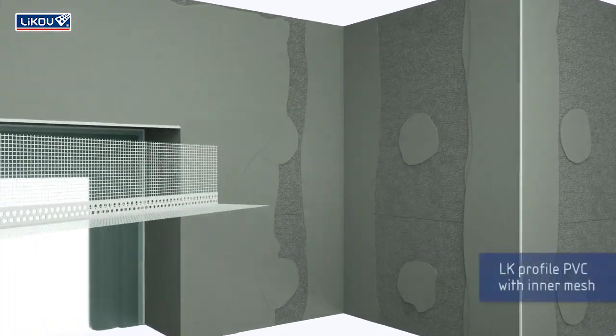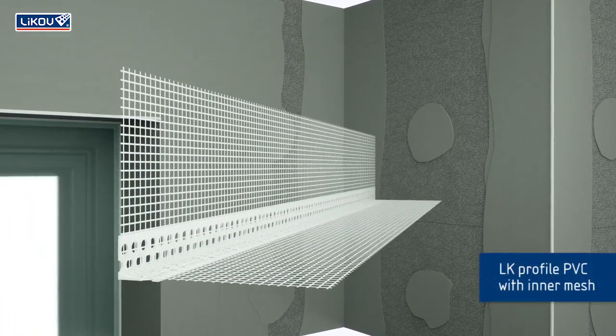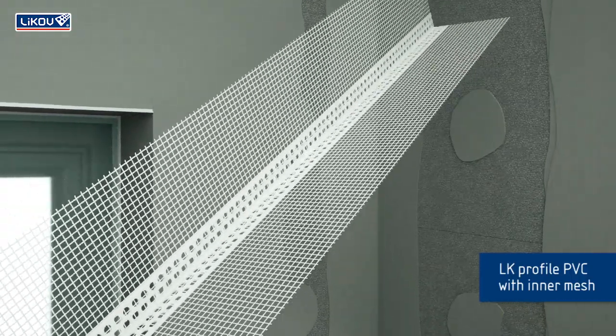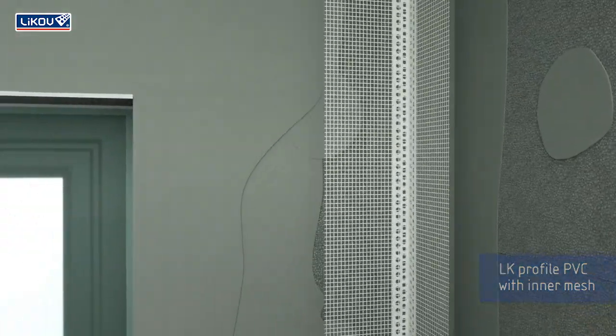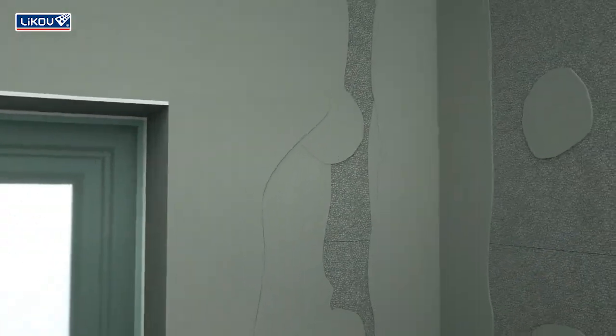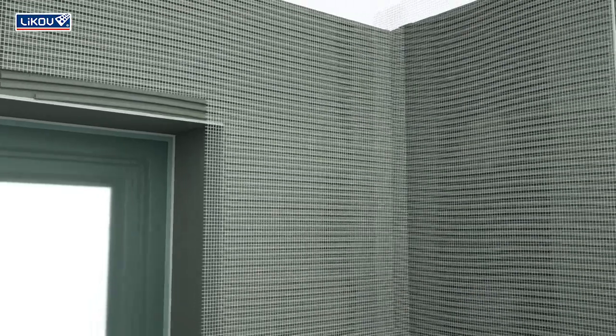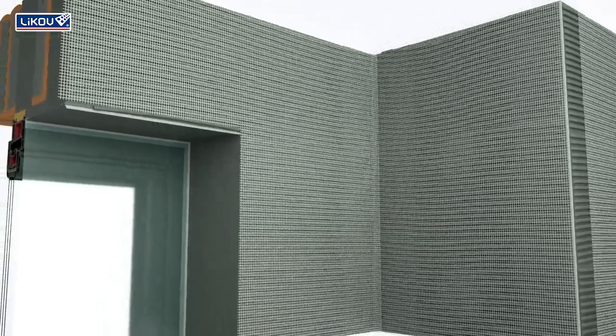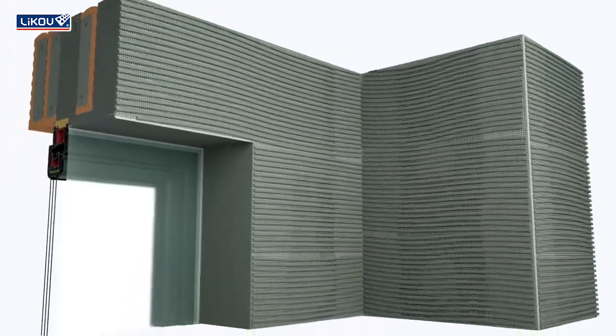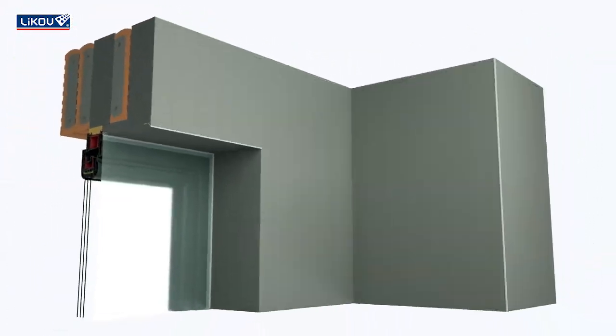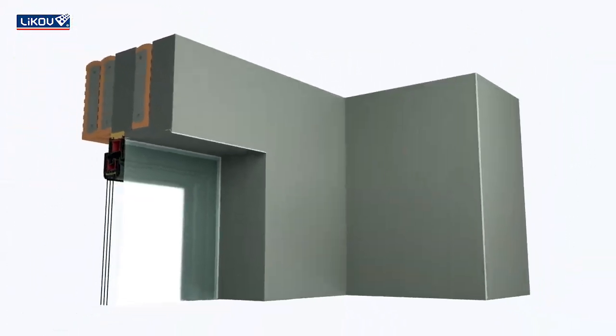Corner bead LK with inner mesh is to be fitted in the inside corner. Finish the base coat, the finishing coat, and remove the protective foil.